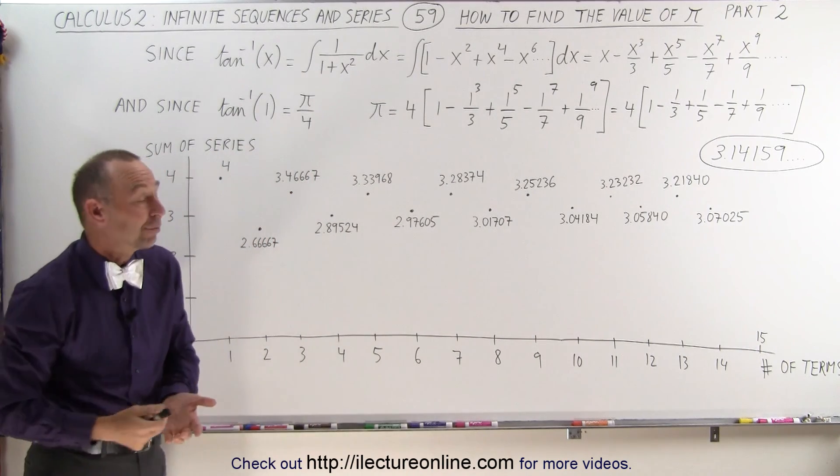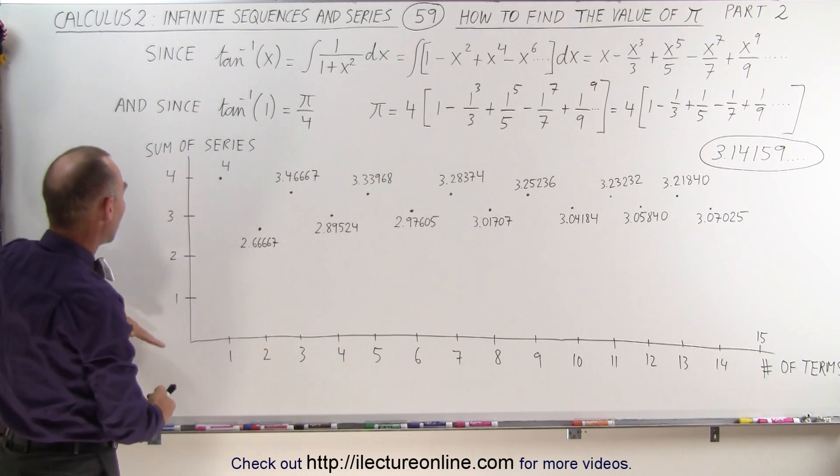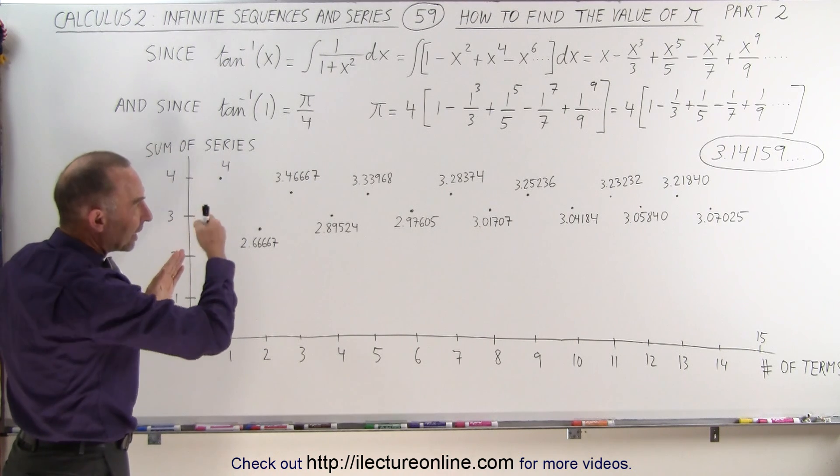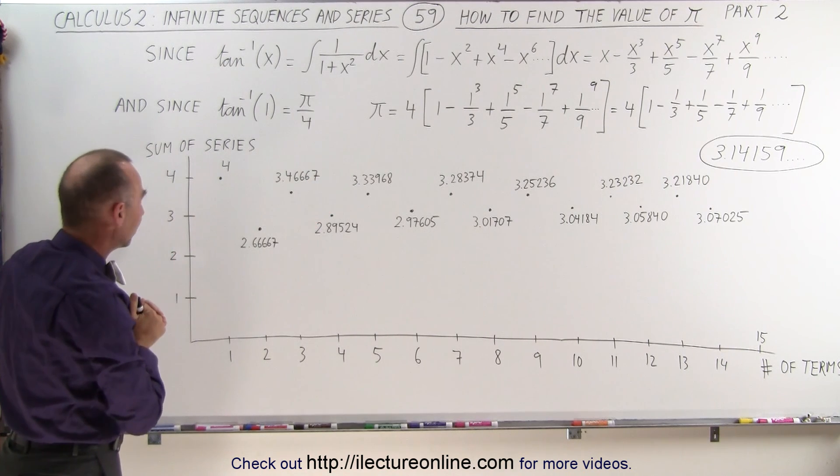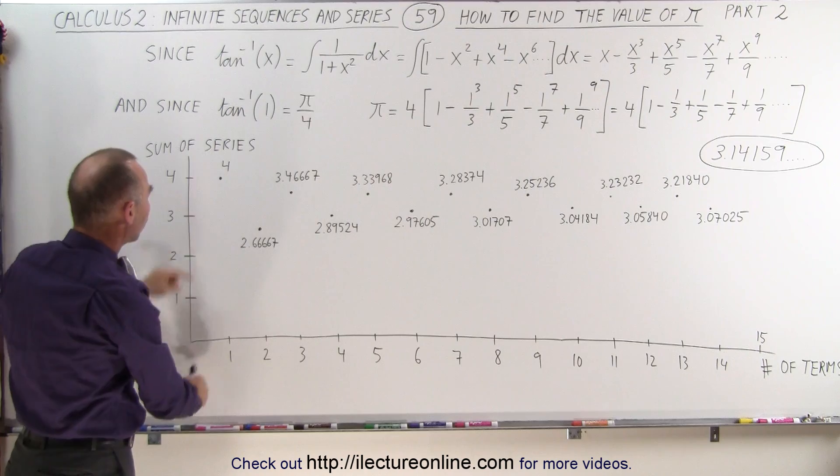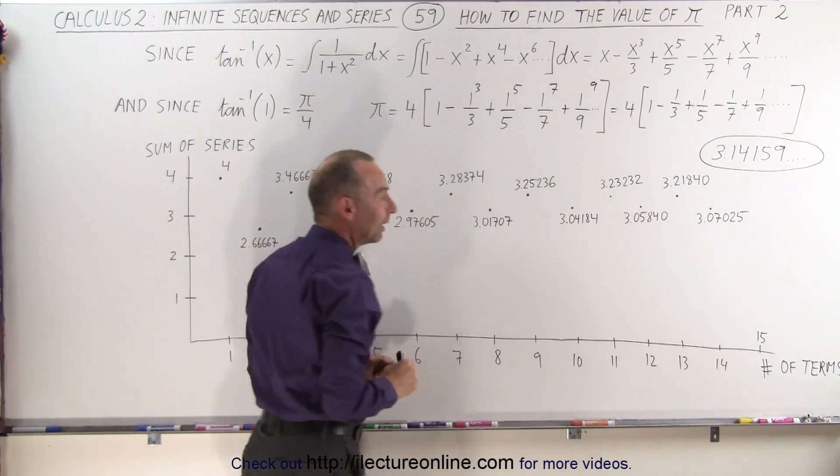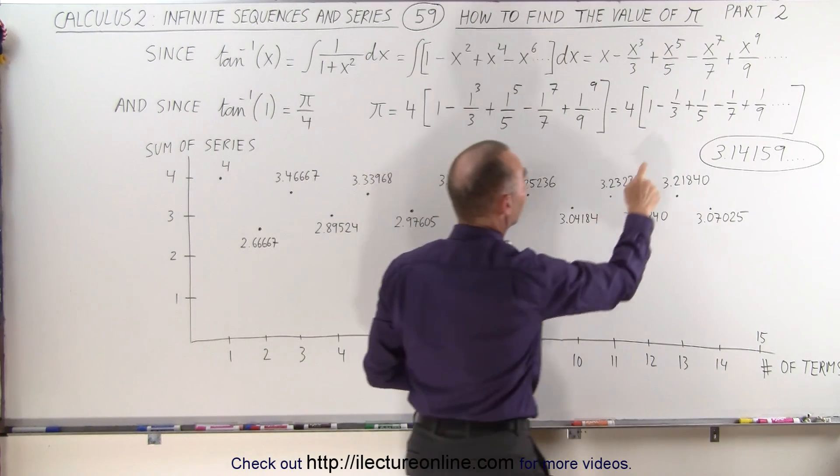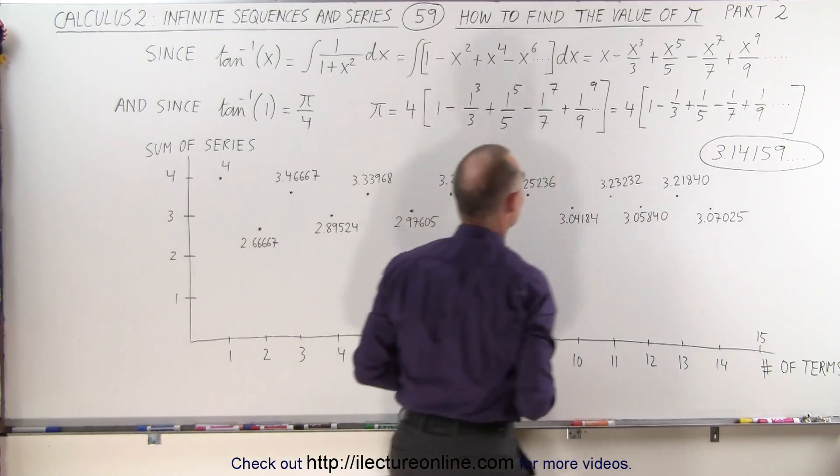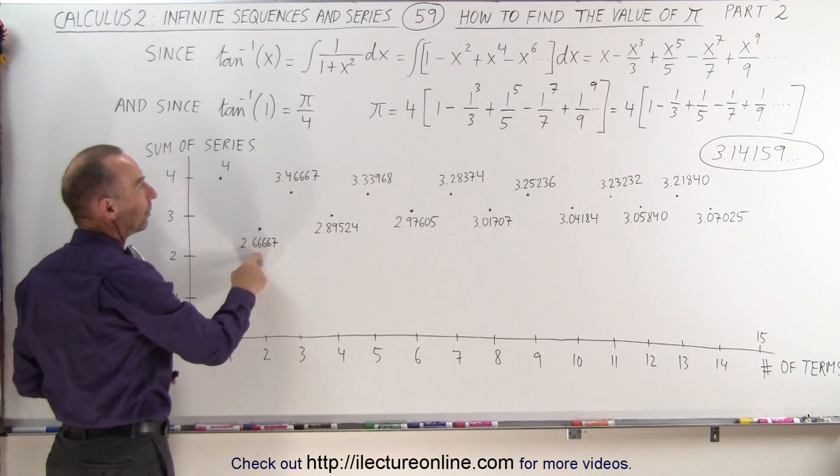What does that look like if we were to graph it out? So here we have a graph where we're going to sum up the individual terms of that infinite series, and notice with one term the value is 4 because 4 times 1 gives us 4. Then with two terms, we subtract from that 4 times 1 third, which is 4 thirds, and we get this value right here.